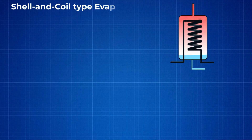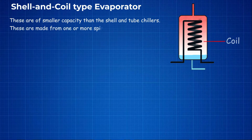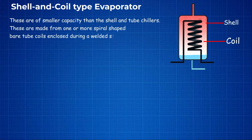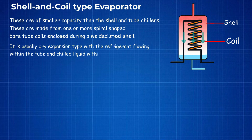Shell and coil type evaporators are of smaller capacity than the shell and tube chillers. These are made from one or more spiral shaped bare tube coils enclosed within a welded steel shell. It is usually a dry expansion type with refrigerant flowing within the tube and chilled liquid within the shell.